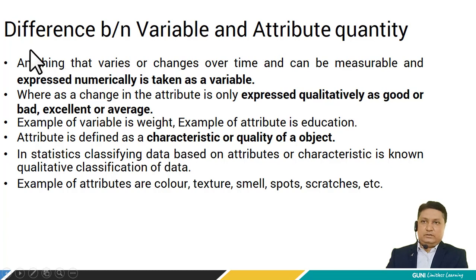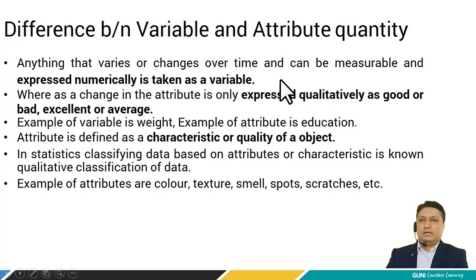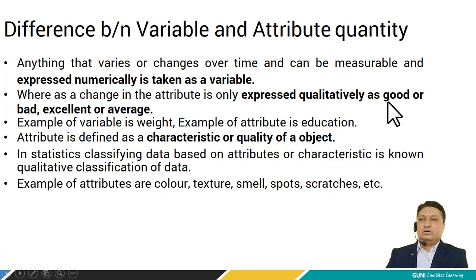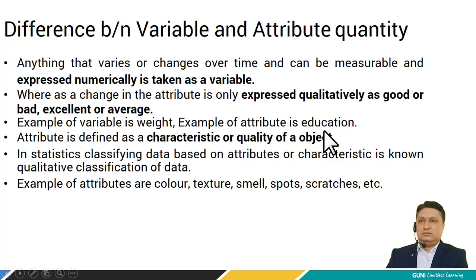Now let's see the difference between variable and attribute quantity. Anything that varies or changes over time, can be measured and expressed numerically, is taken as a variable. Whereas a change in attribute is only expressed qualitatively as good or bad, excellent or average. An example of variable is weight, and an example of attribute is education.